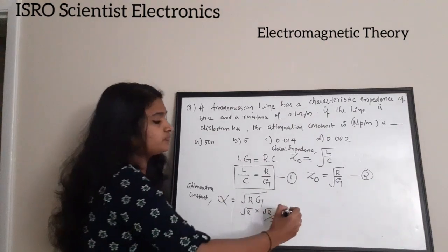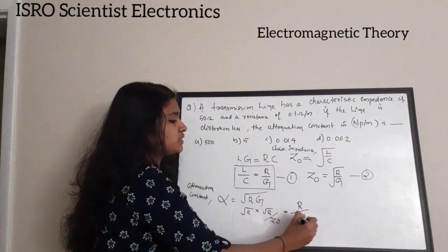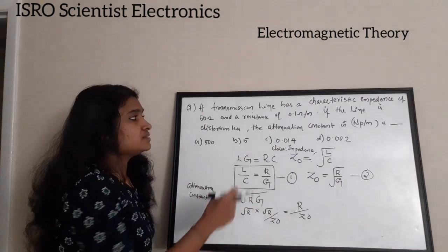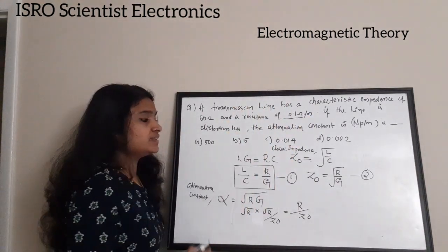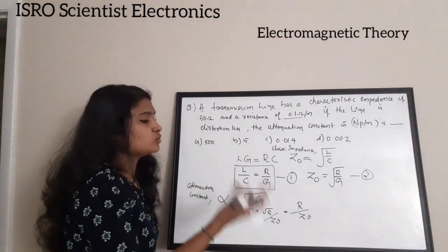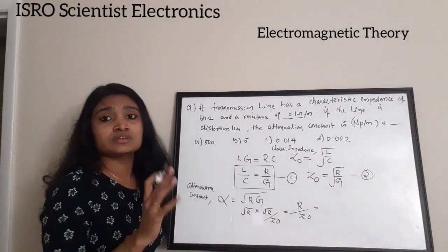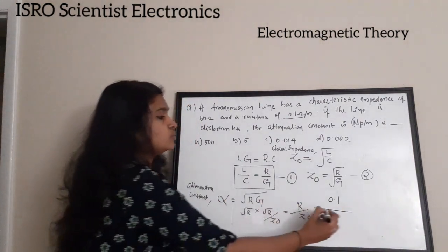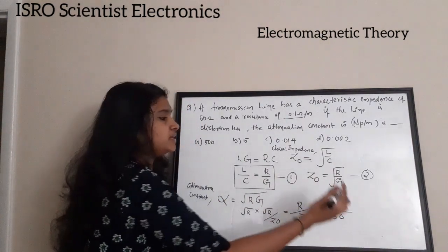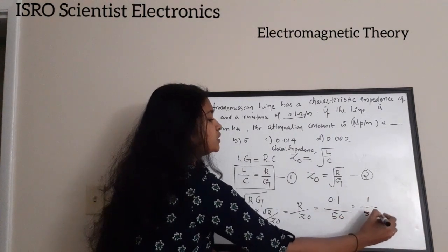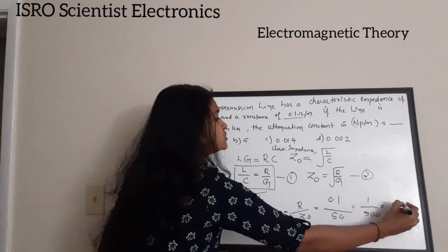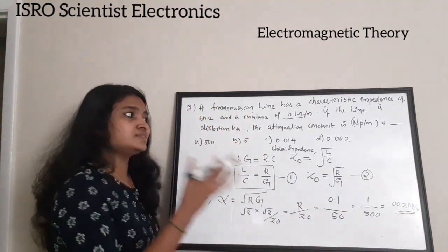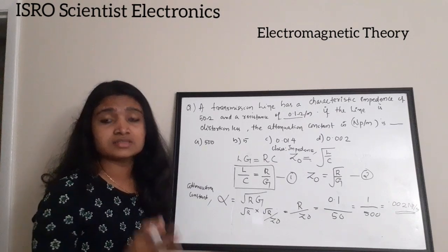Simplifying: √R · √R is R, so α = R/Z₀. In the question, R = 0.1 and Z₀ = 50 ohms, so α = 0.1/50 = 1/500 = 0.002 Neper per meter. The unit of attenuation constant is Neper per meter.